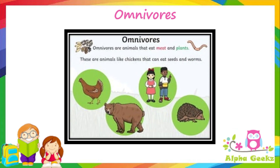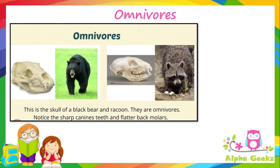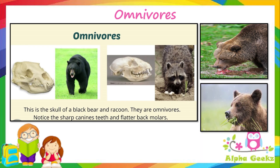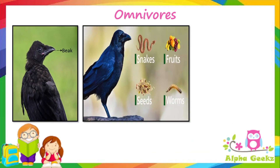Omnivores are the animals that can eat both meat and plants, such as chickens that can eat seeds and worms. These omnivores have sharp teeth like carnivores to tear flesh and flat teeth like herbivores to grind food. Crow is an omnivore but it does not have teeth — it has a beak instead. It eats snakes, fruits, seeds and worms.